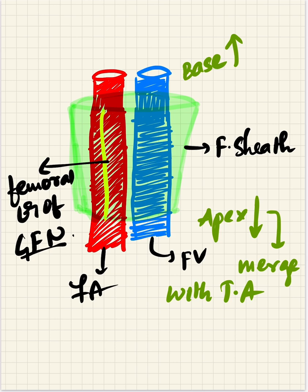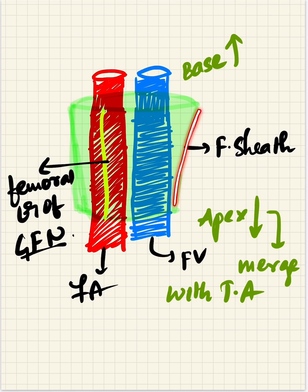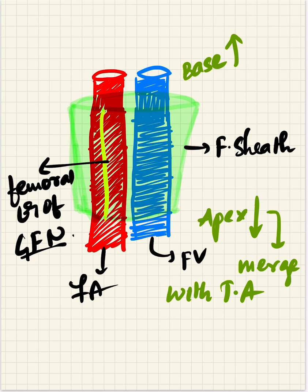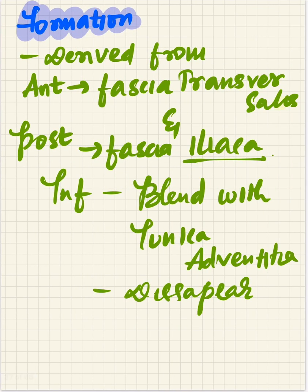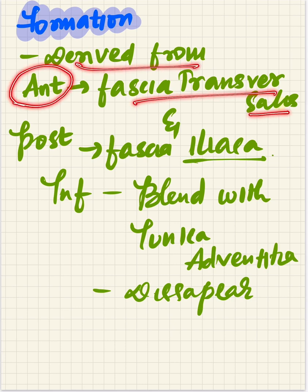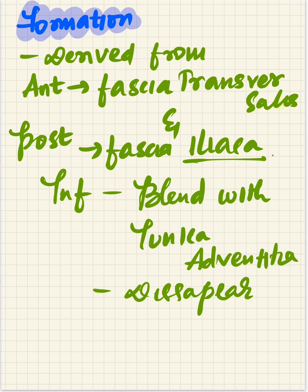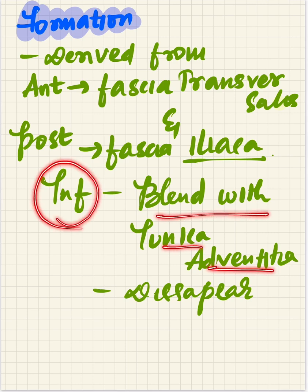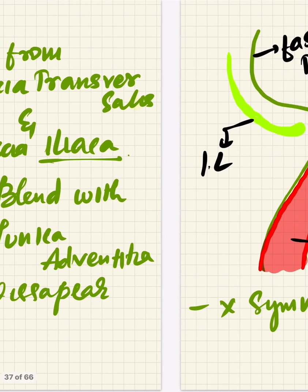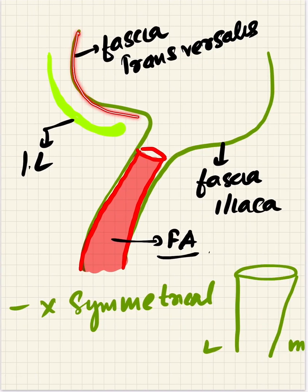The femoral sheath is not symmetric - on the lateral side it has a vertical wall, and on the medial side there is an obliquely placed wall. The femoral sheath is derived anteriorly from the fascia transversalis covering the transverse abdominis muscle, and posteriorly by the fascia iliaca covering the iliacus muscle. Inferiorly it blends with the tunica adventitia and disappears.